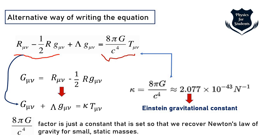The c⁴ is the speed of light raised to the fourth power representing its four-dimensional nature, G is Newton's gravitational constant, and the 8π factor comes from computing the surface area of a sphere — it derives from Poisson's equation of gravity. So 8πG is a constant chosen to recover Newton's law of gravitation for small static masses.